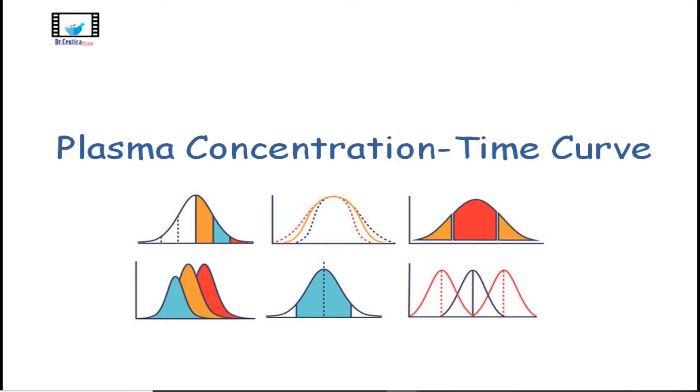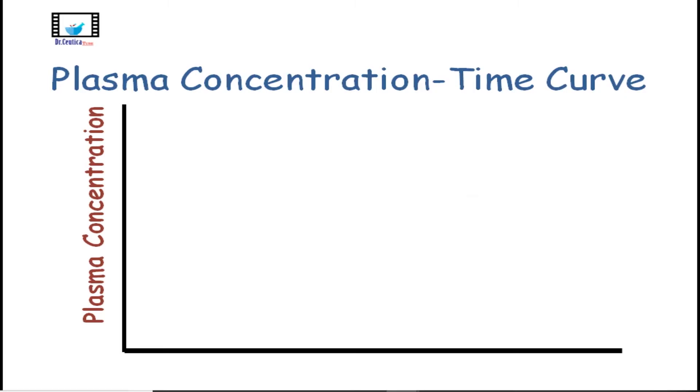The plasma concentration time curve is built from the data collected after administration of a single oral dose of the drug, withdrawing blood samples at certain time intervals and quantifying the concentration of the drug in those samples. The calculated drug concentration is plotted on the y-axis and the time of each sample is on the x-axis, forming the plasma concentration time curve. As it appears on the screen, there are certain concentration related terms to know and there are other time related terms to acknowledge here. We will start with the concentration related ones.